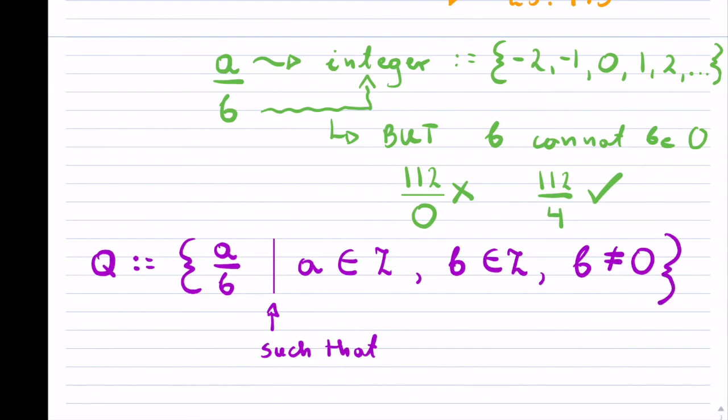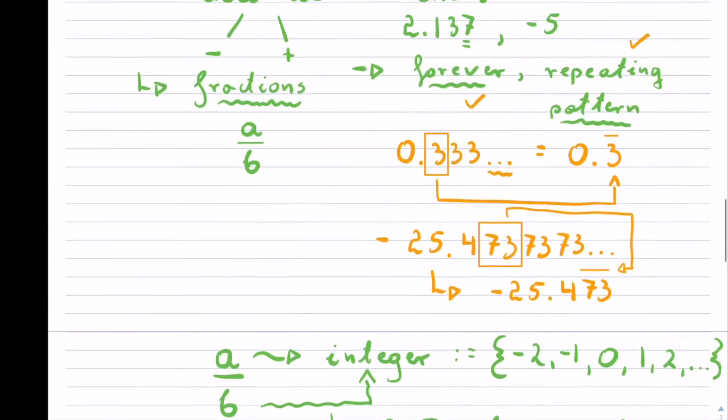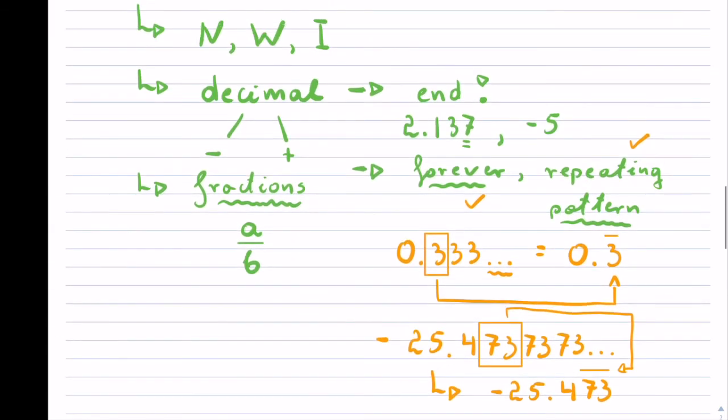That is actually the formal definition. Unfortunately, it doesn't look that pretty for anyone who is just starting math. If you want to get a better kind of intuitive understanding of what rational numbers are, that's why I started with just going over how they look like.